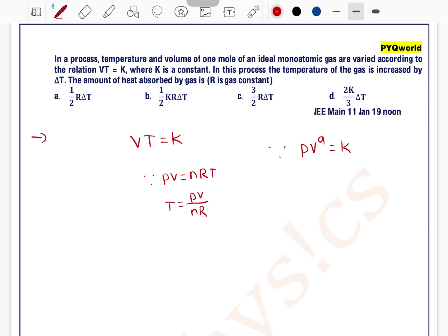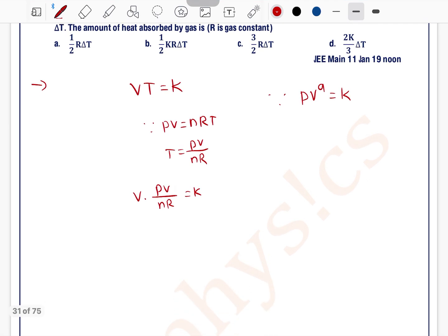For that purpose, I am going to use ideal gas equation PV equals nRT. So this temperature can be written as PV divided by nR. So if we put this temperature equation in the given formula, that is PV divided by nR equals constant. So this will be P into V to the power 2 equals nRK.